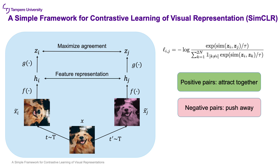In self-supervised learning, the contrastive loss is used to learn robust features. This loss is implemented based on softmax loss, which fails to add a clear angular margin between classes. So we decided to explore how to incorporate angular margin loss in the self-supervised learning procedure.